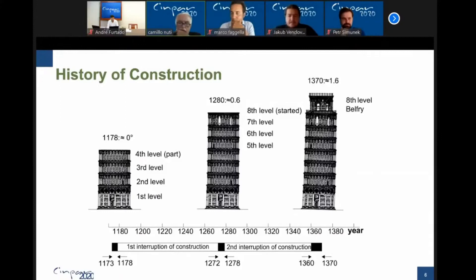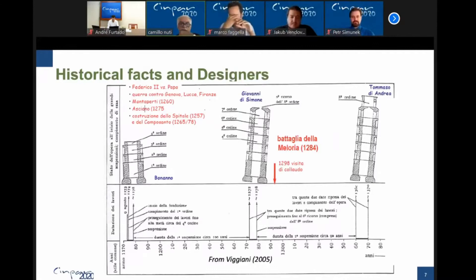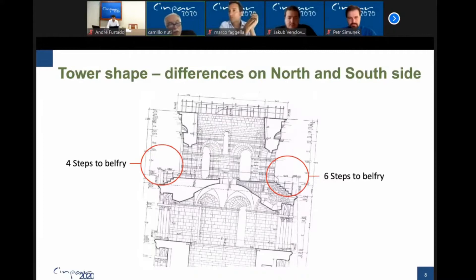The tower construction started in 1100, then stopped in 1178, and they started again in the middle of the 1200s–1300s. Then with the Battle of La Meloria they stopped again, and in the middle of the 1300s they started again and built the Belfry. Then from the period around 1280 the tower started to bend, and in 1370 they had 1.6 meters tilt towards south. The tower moved and moved, and when they built the Belfry on the south side, they built six steps instead of four on the opposite side — it was already significant.